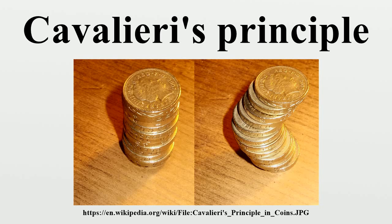Consider a sphere of radius r and a cylinder of radius r and height r. Within the cylinder is the cone whose apex is at the center of the sphere and whose base is the base of the cylinder. By the Pythagorean theorem, the plane located y units above the equator intersects the sphere in a circle of area π(r² − y²). The area of the plane's intersection with the part of the cylinder that is outside of the cone is also π(r² − y²).